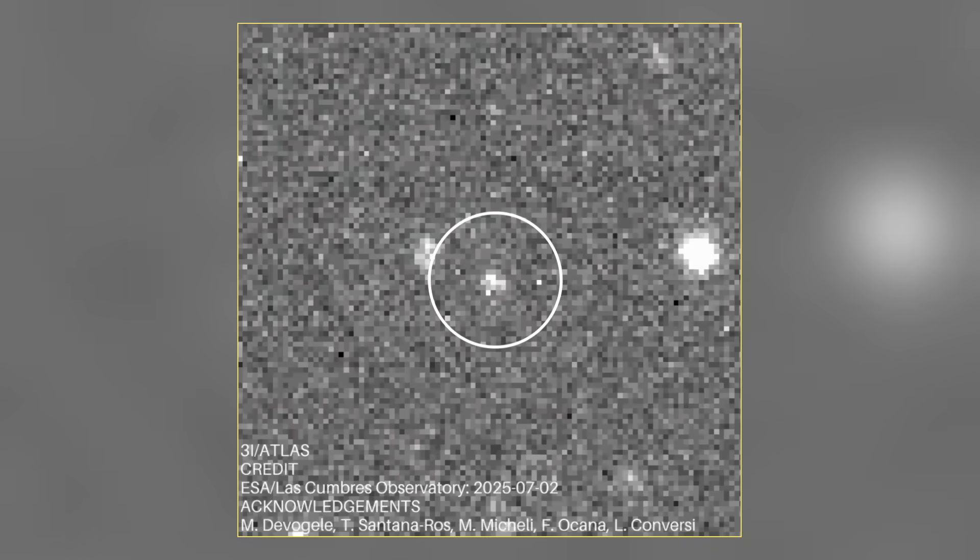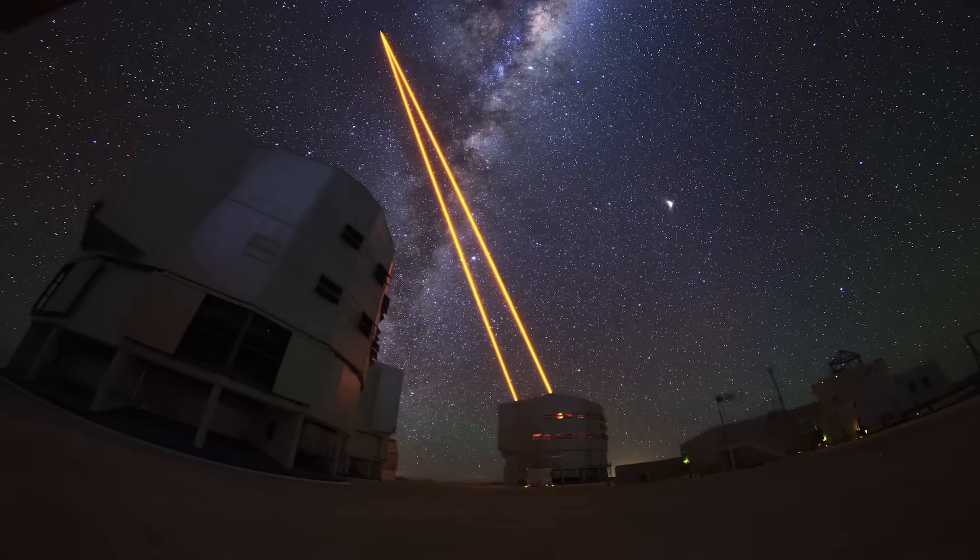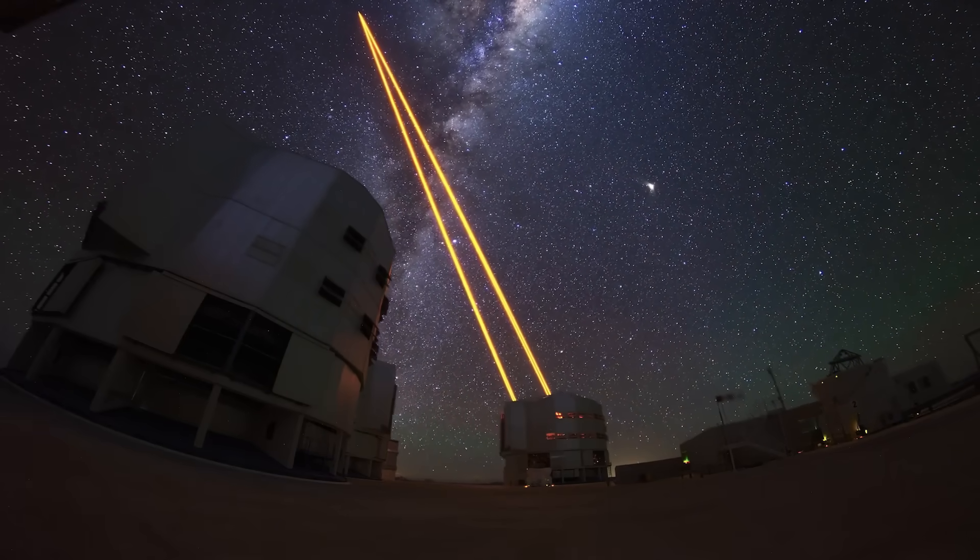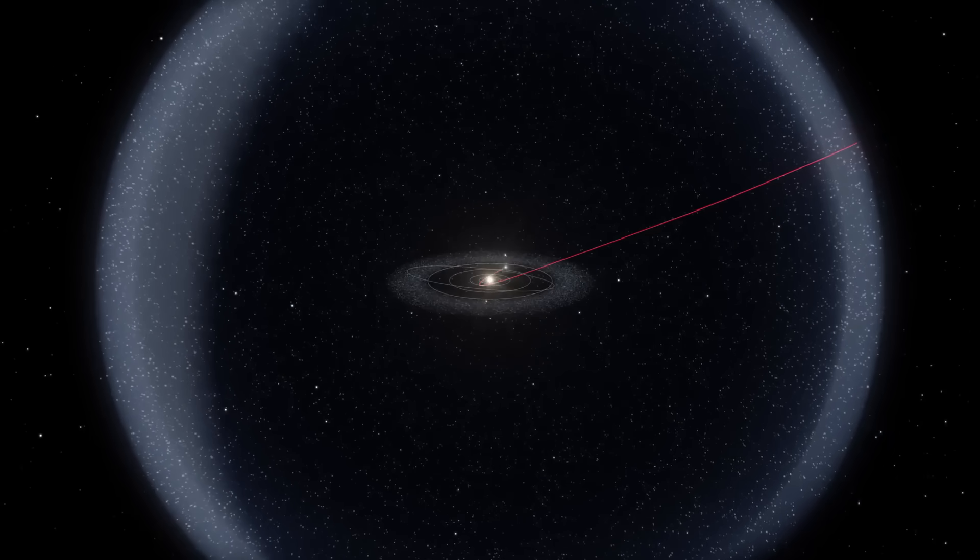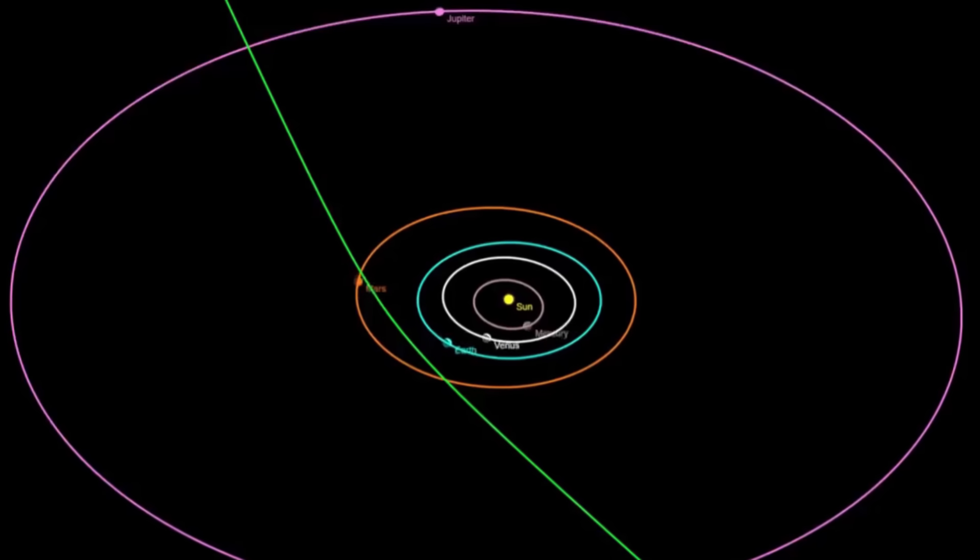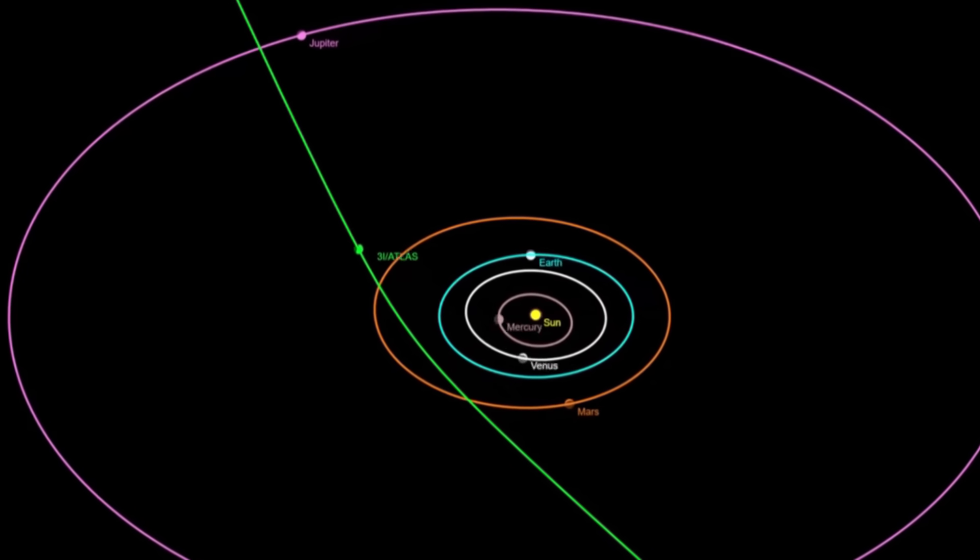July 1st, 2025. A barely visible dim pixel glides across the sky, which is picked up by the Atlas telescopes in Hawaii and South Africa. Its motion is strange, its speed is alarming, and its trajectory is sharply hyperbolic. Astronomers run the orbital calculations, and one thing becomes clear.